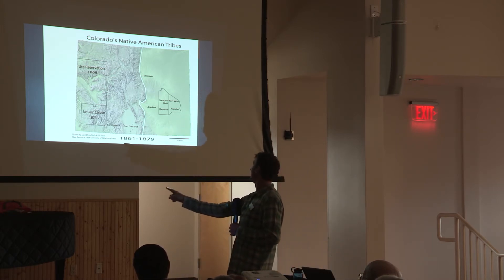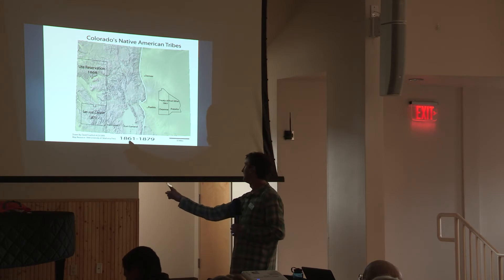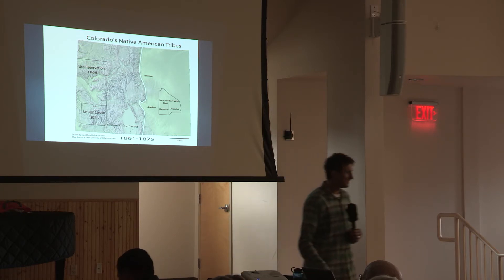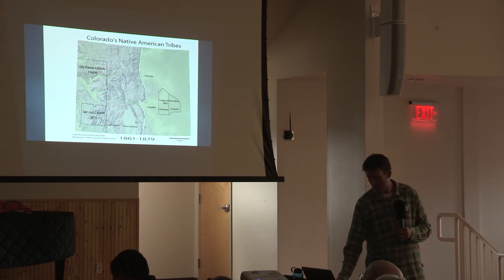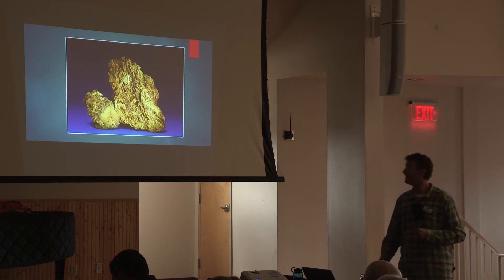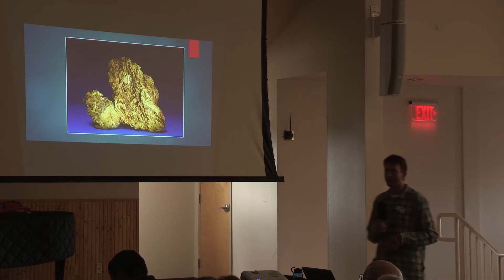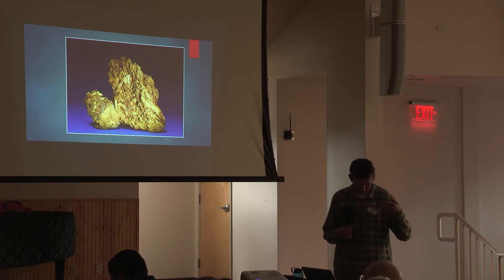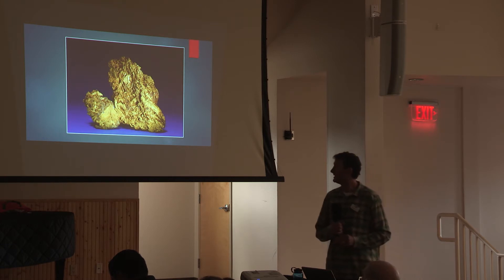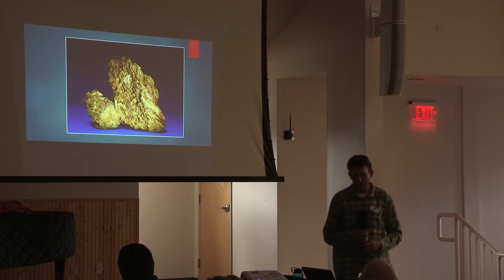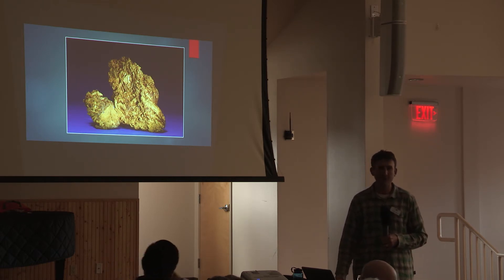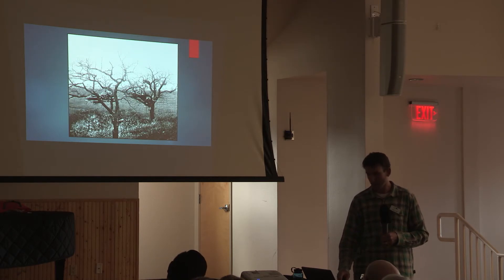What happened right around here? So this changed everything. And this is where this story kind of goes downhill, really. Gold was discovered by the Russell family, some Georgians, in Dry Creek Tributary, Cherry Creek in 1858, down there, Denver. And in 1859, the gold rush happened.